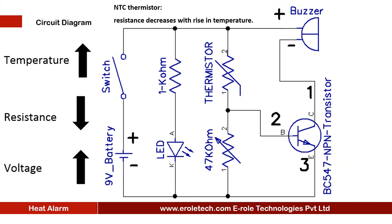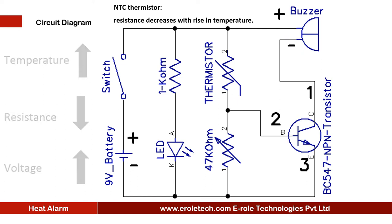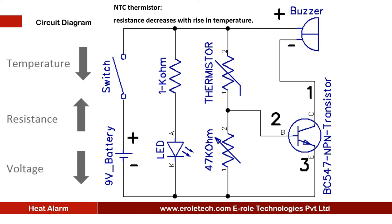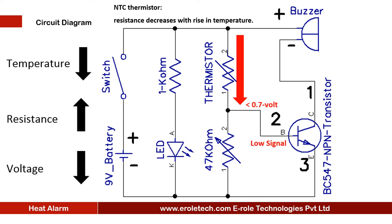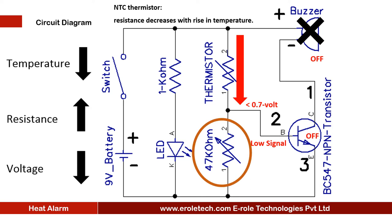As the temperature goes down, the resistance of the thermistor will increase and the voltage at the base terminal of the transistor will decrease. When this voltage goes below 0.7 volts, the transistor will turn off and the buzzer will go into silent mode. The 47 kilohm adjustable resistor, also called a potentiometer, can be used to adjust the level of heat at which we want to turn on the buzzer.